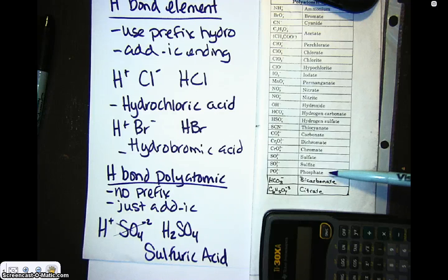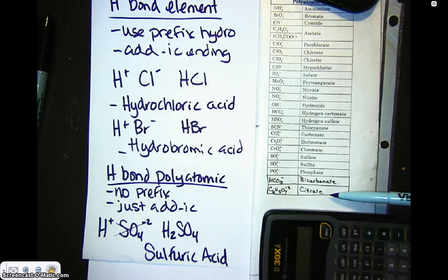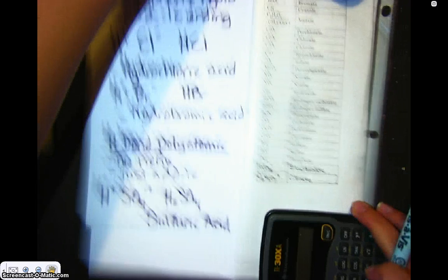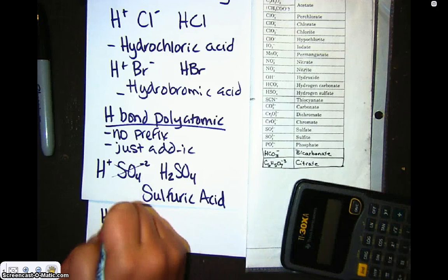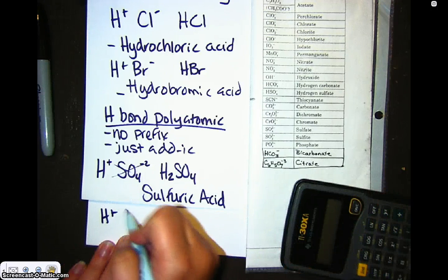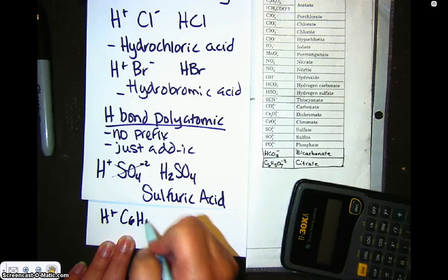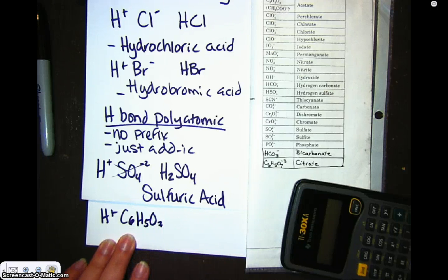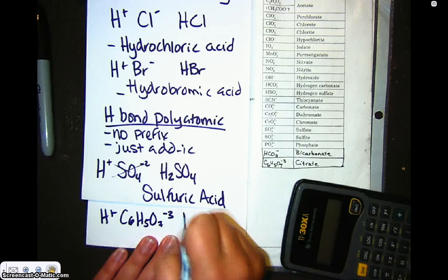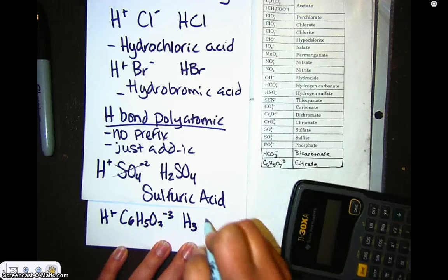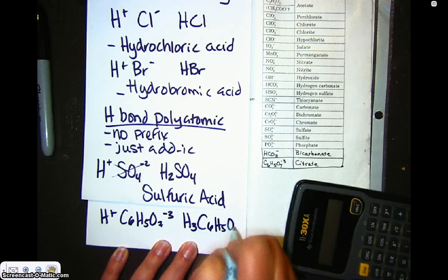So let's do citrate, because that one kind of looks pretty confusing. So hydrogen bonding with citrate. So citrate, we've got hydrogen's plus one again. Citrate is C6H5O7, is the polyatomic, and it has a minus three charge. So again, we're going to criss-cross. So you get H3C6H5O7.